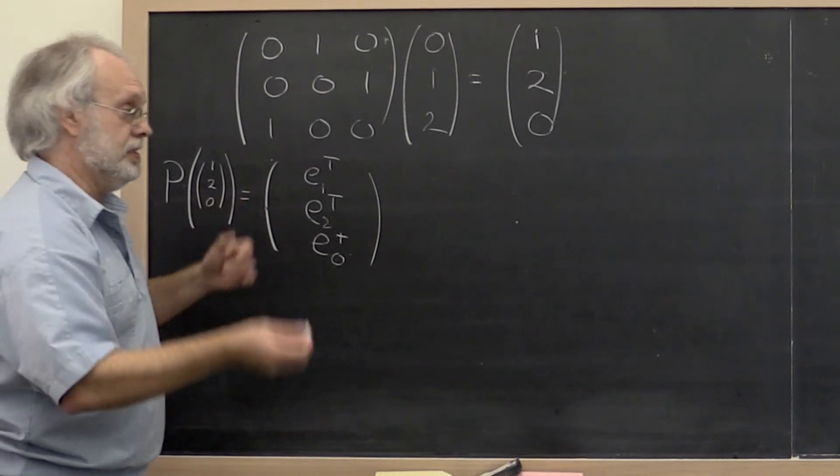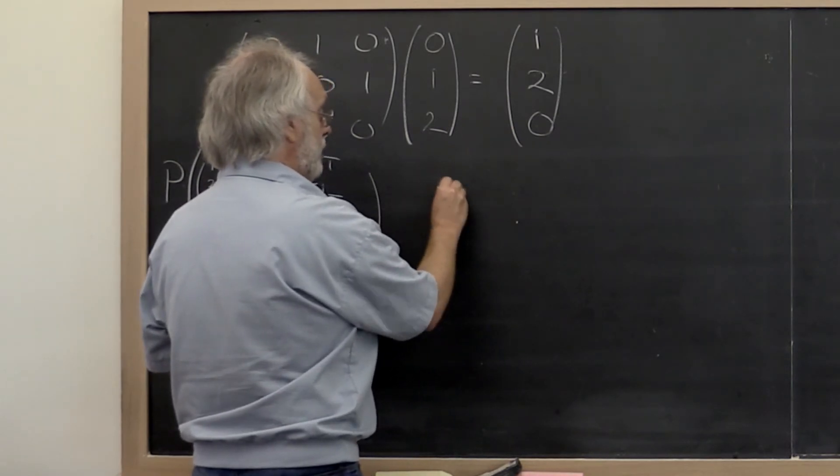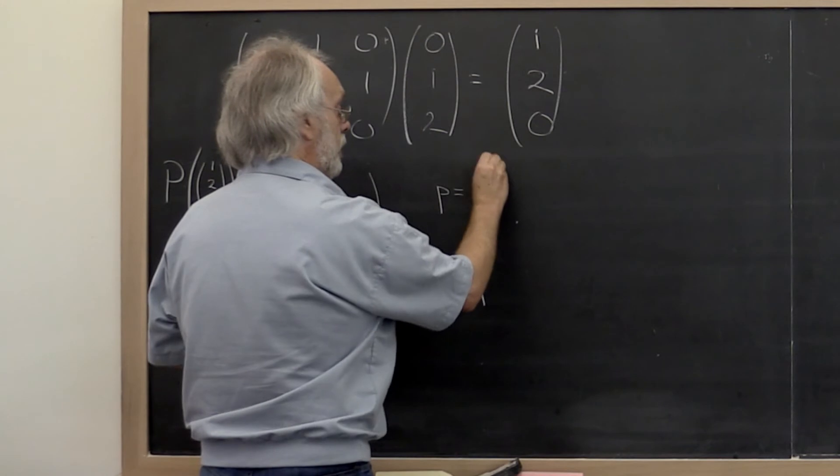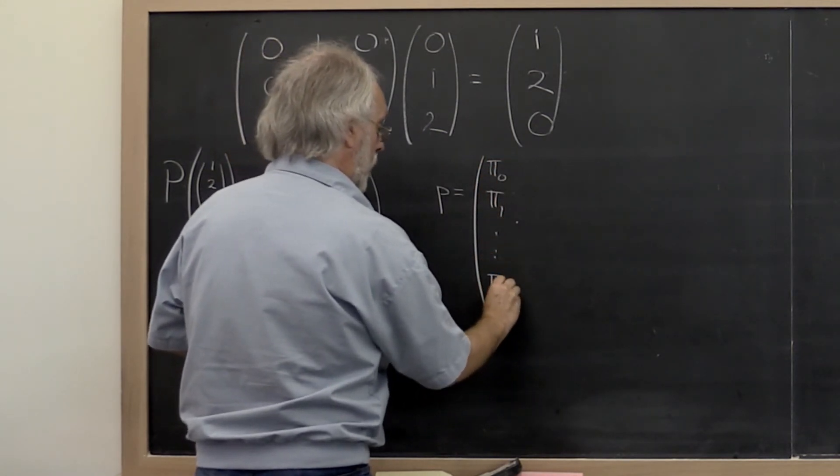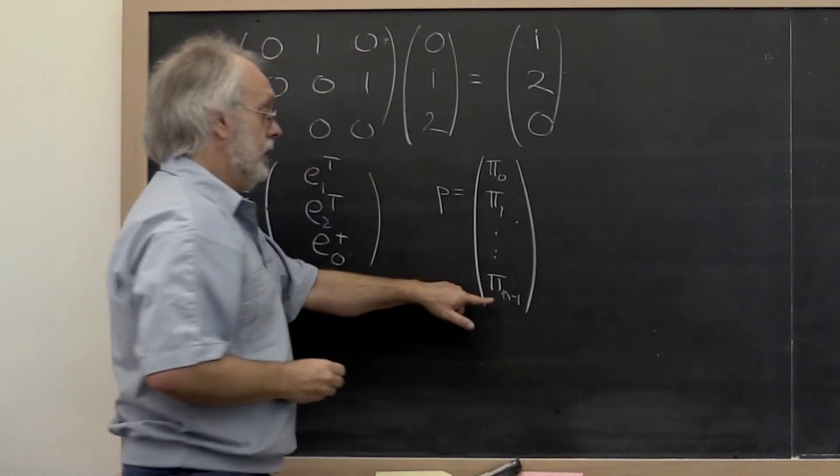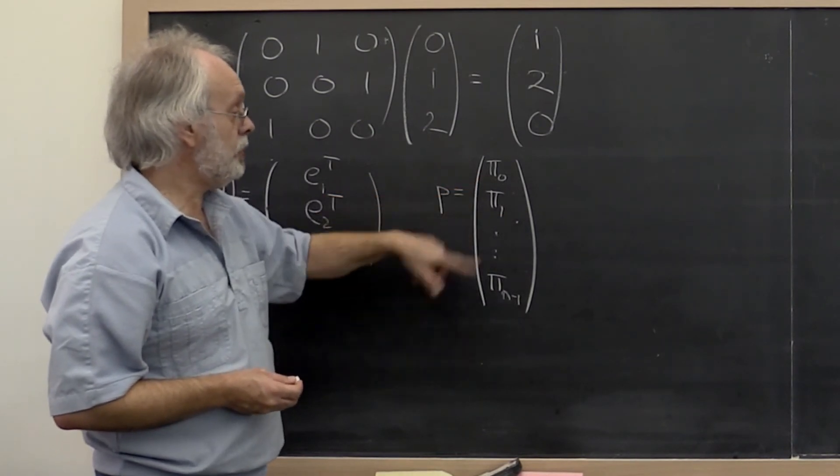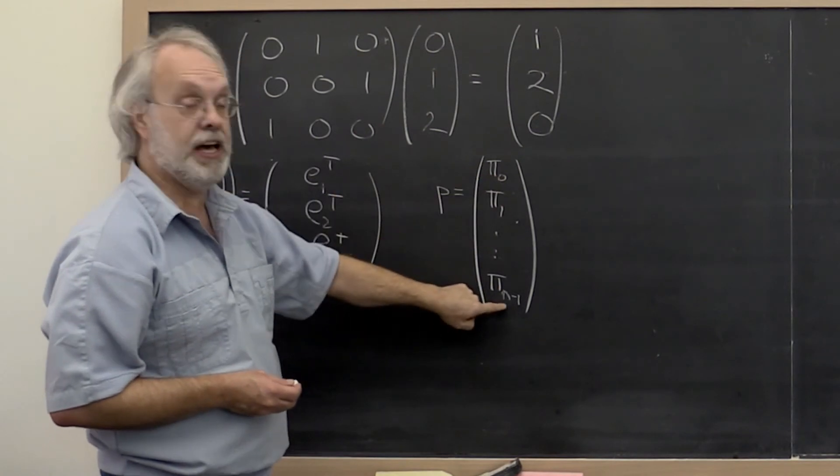Let's generalize this idea. In general, we can say given a permutation vector π, indexed with the first entry π₀, the second entry π₁, and so forth, where this is merely a permutation of the integers 0 through n-1.